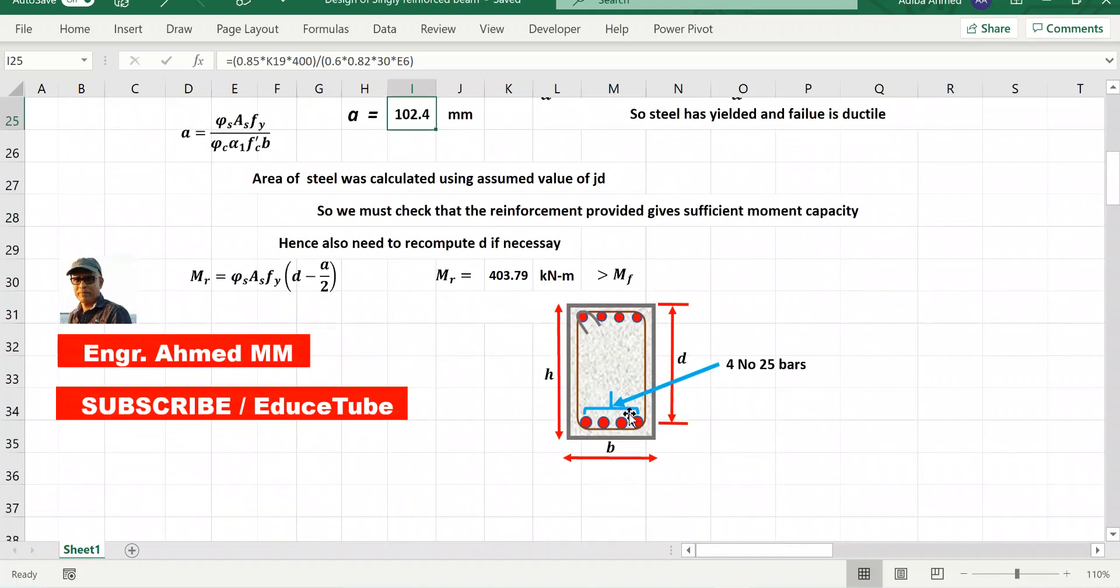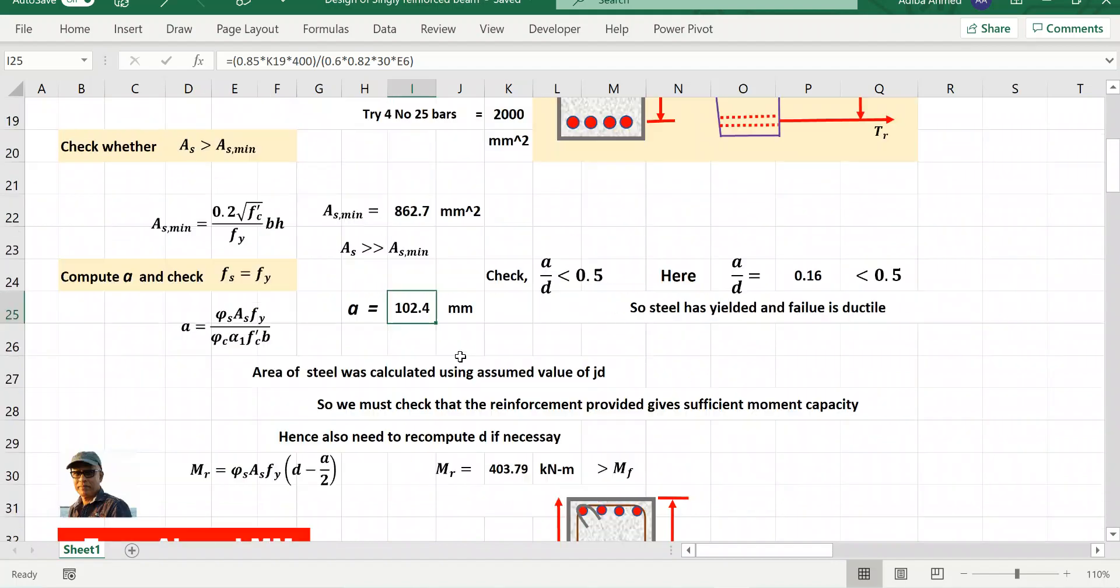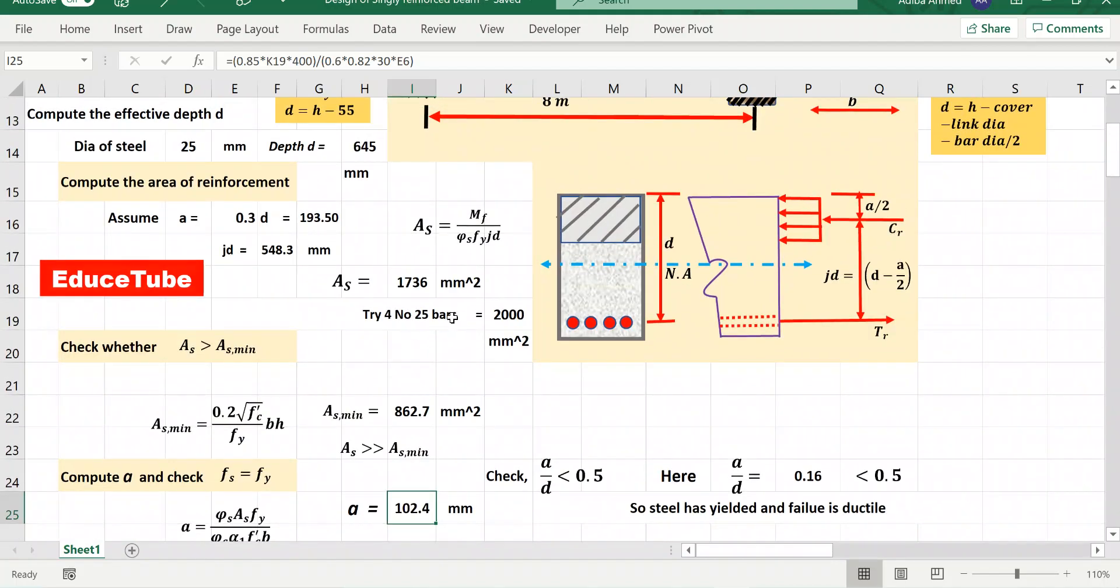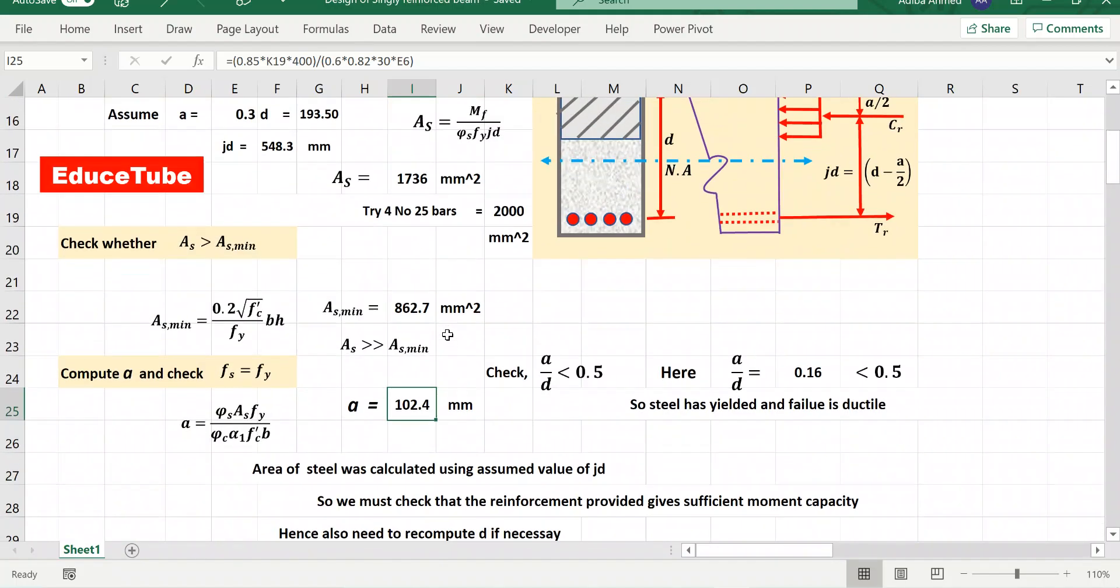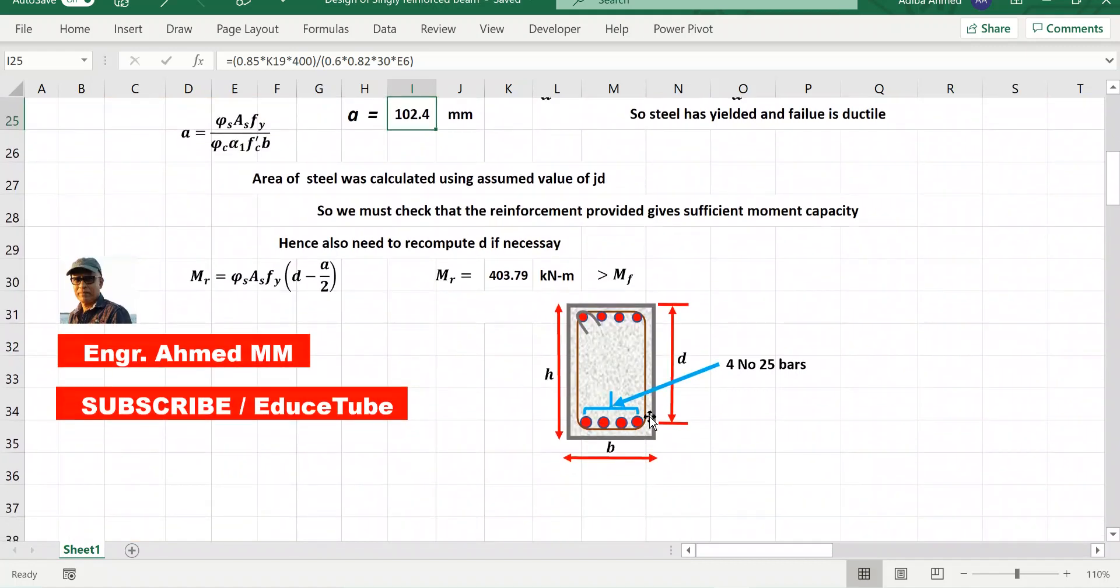So here I have shown, as I took 4x25 bars, so it is perfect. So our design is finished. I think that's enough for this simple beam. Thanks you.